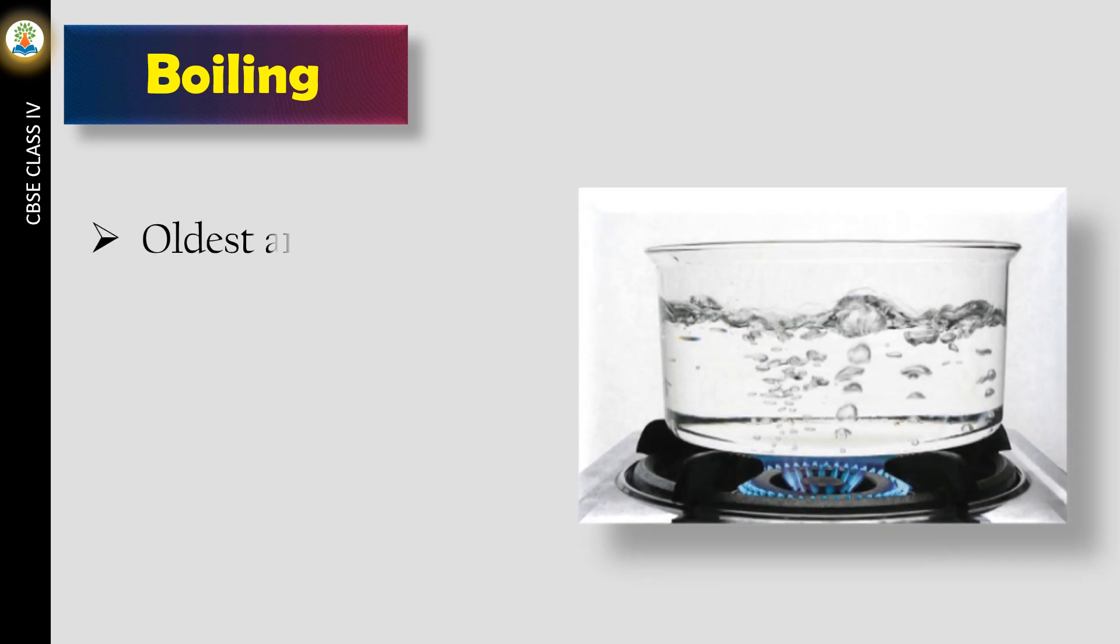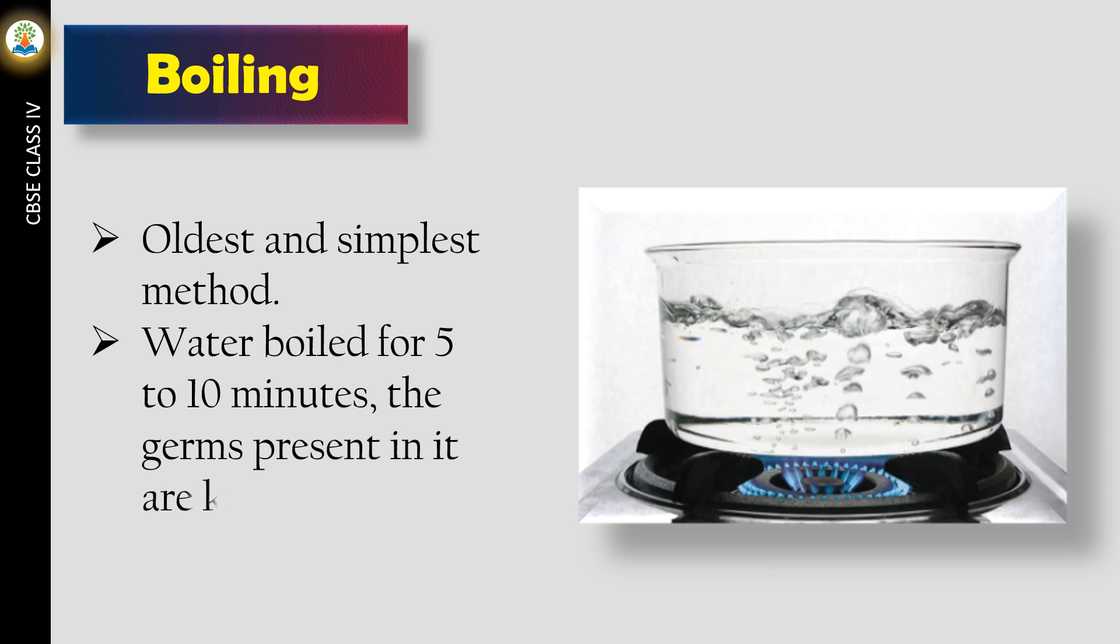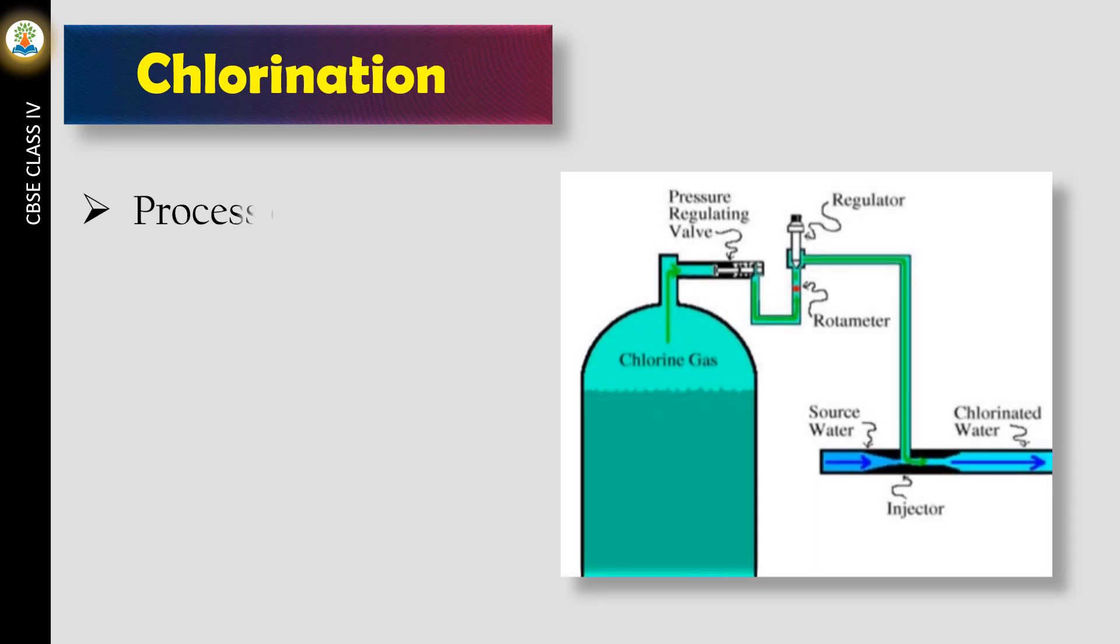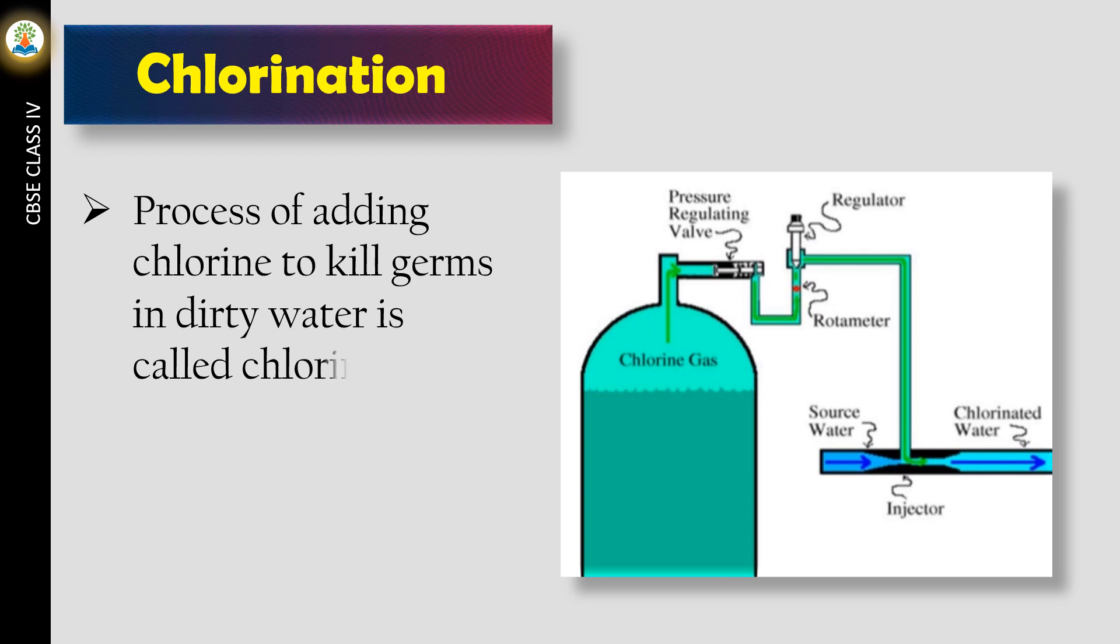Boiling is the oldest and simplest method. Water boiled for 5 to 10 minutes kills the germs present in it. Chlorination is the process of adding chlorine to kill germs in dirty water. Nowadays, chlorine tablets are available.